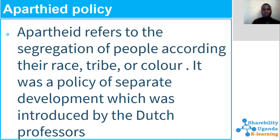Apartheid refers to the segregation of people according to their race, tribe, or color. It was a policy of separate development which was introduced by the Dutch. So if somebody is segregating you according to your tribe, race, or color, that act is called apartheid, or it can also be called tribalism. It is a policy of separate development which was not a very good act — it tortured Africans mentally.